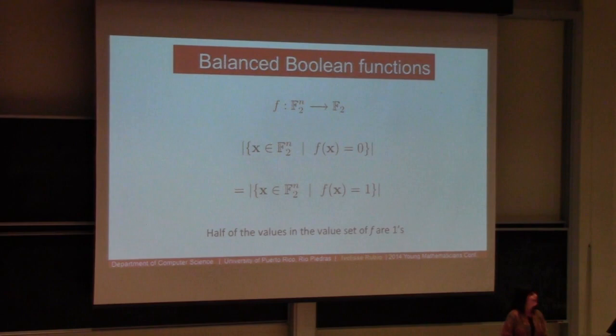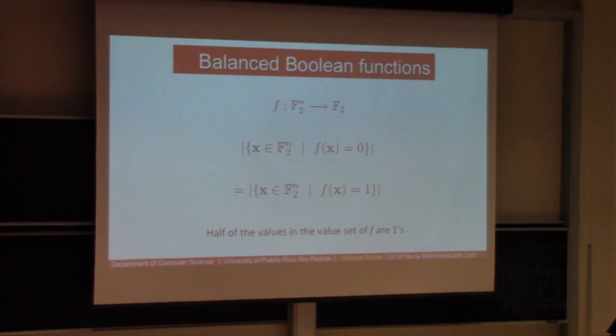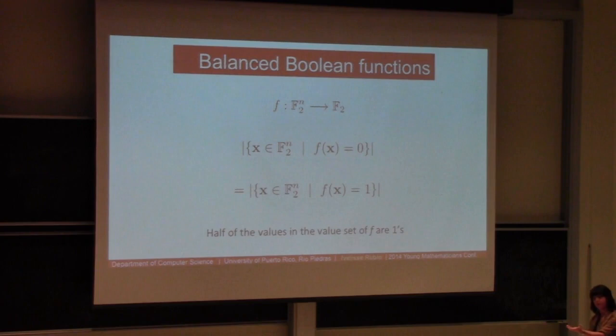A balanced Boolean function is one where we evaluate the function at all possible input vectors and get the same number of 1s and 0s in the value set — that is, half of the value set is equal to 1.